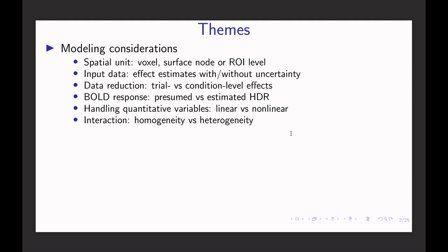In terms of input data at the population level, we usually take beta values from each subject. Those betas come from the time series regression model. Those betas intrinsically carry standard errors. But most of the time, people simply ignore the uncertainty information about the betas. Occasionally, it may be worthwhile considering combining the uncertainty information at the group level.